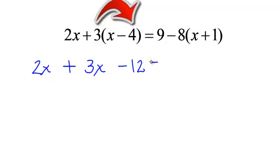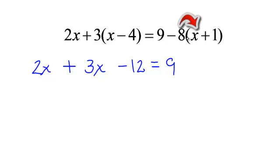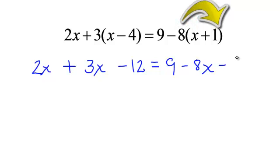On the right side, bring down your 9. You're not going to do anything with 9 yet because you need to multiply first this distributive property. Negative 8 times x is negative 8x. Negative 8 times 1 is a negative 8.